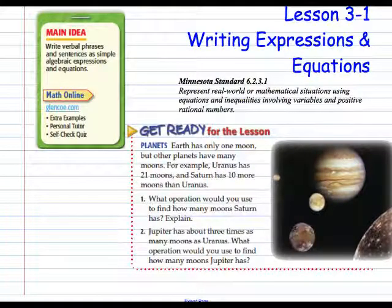Earth has only one moon, but other planets have many moons. For example, Uranus has 21 moons and Saturn has 10 more moons than Uranus.